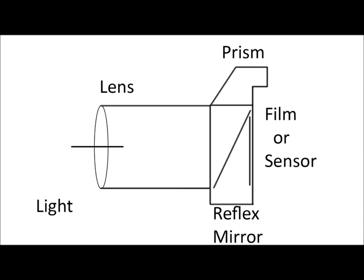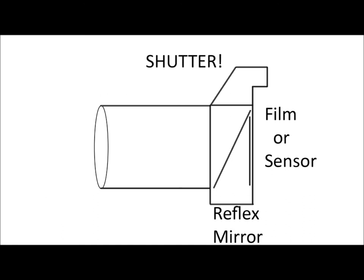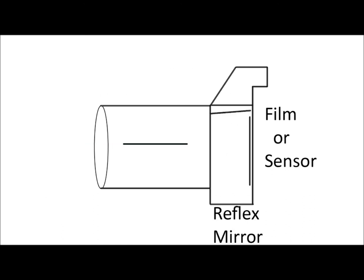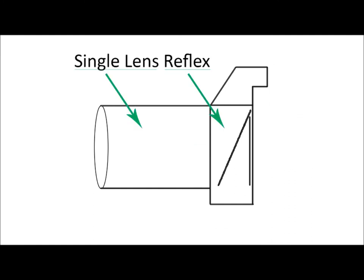Before the image is taken, the reflex mirror redirects the light into the pentaprism, which directs it to the user's eye. When the user activates the shutter, the mirror flips upward and the light reaches the image media instead.